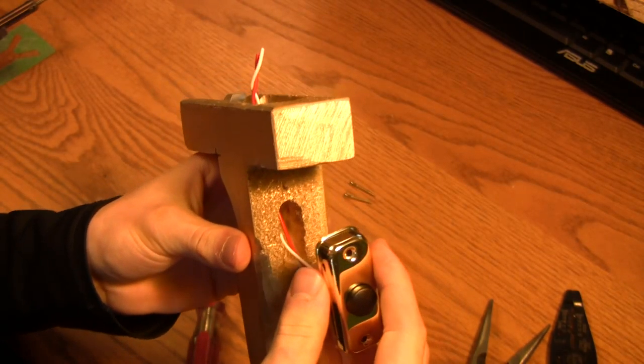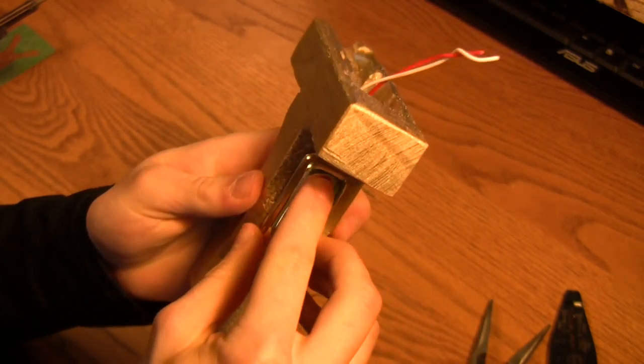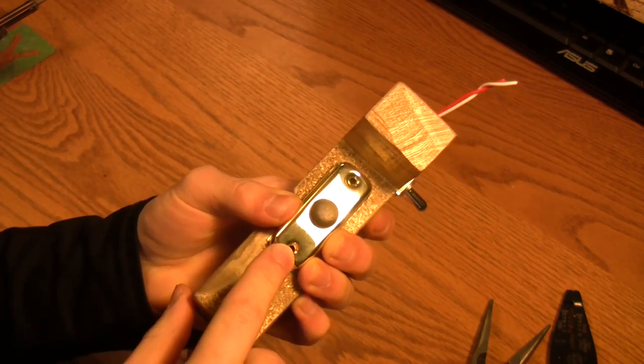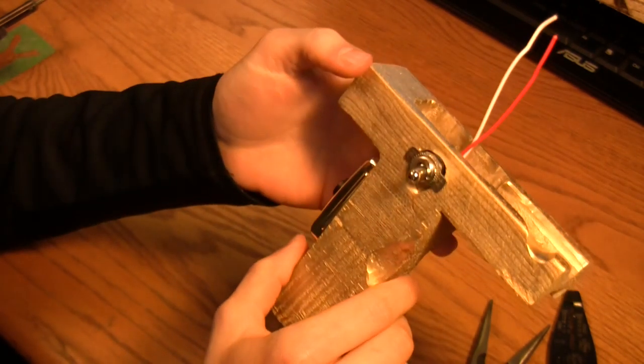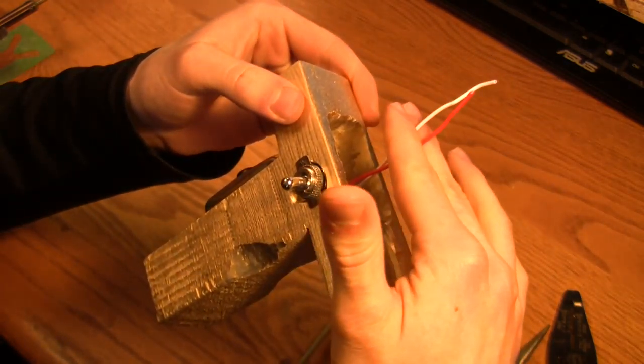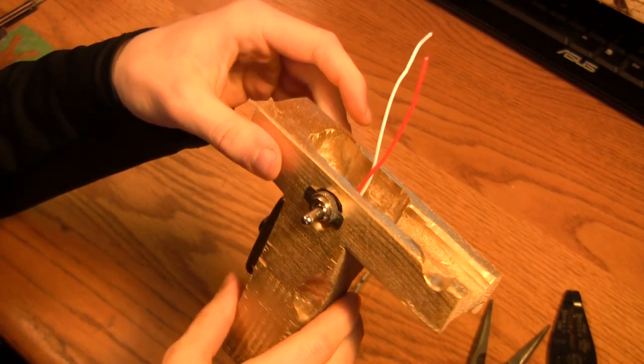Alright, so I got these two wires connected to the doorbell trigger, and now we just have to send them both up through the pistol grip. And we'll go about like that, and there we go. Push this down and you can reconnect the doorbell.